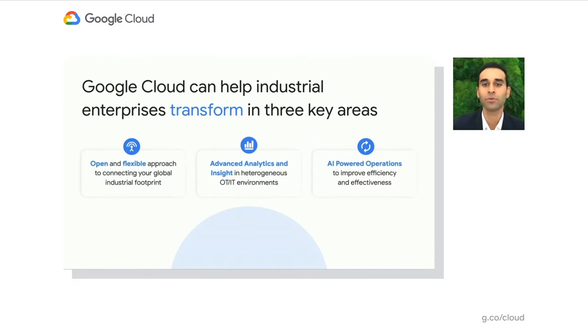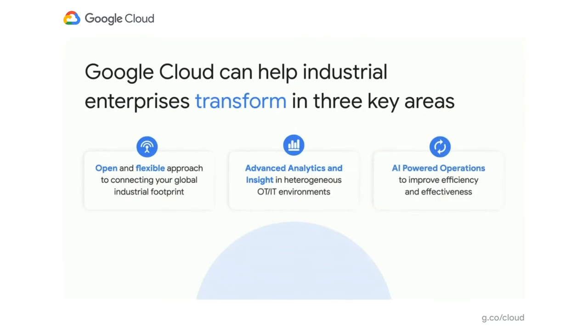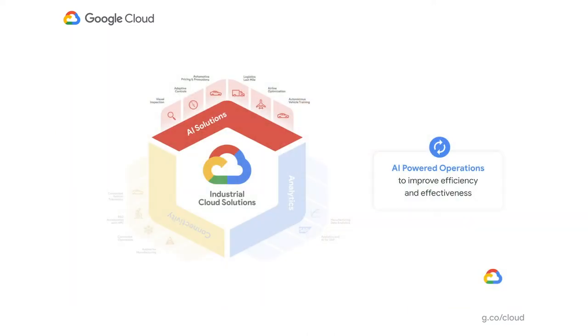Let me first begin by sharing how we are approaching our strategy to help industrial enterprise customers transform themselves. Our strategy hinges on three pillars. First, to provide tools and technologies to connect your physical assets and workforce to the cloud. Second, to bring both your existing analytics tools and new analytics capabilities that augment human decision-making. And third, to drive end-to-end automation of key industrial processes by embedding our differentiated AI technologies into the industrial workflows. As part of this session, I'll focus only on our AI capabilities.